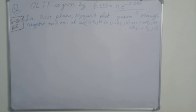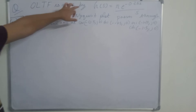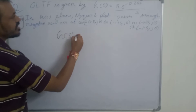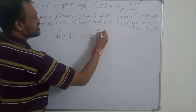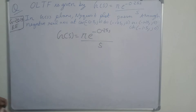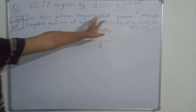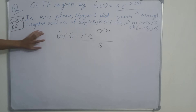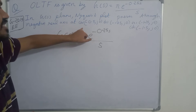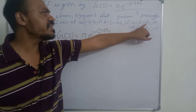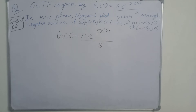In this question, it is given that in the GS plane, the open loop transfer function is given by G(s) = π·e^(−0.25s) / s. We have to find the point at which the Nyquist plot passes through the negative real axis. There are four options: −0.5+j0, −0.75+j0, −1.25+j0, and −1.5+j0.